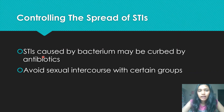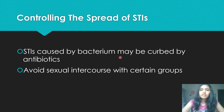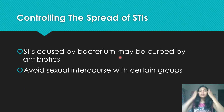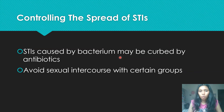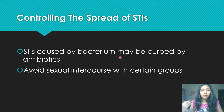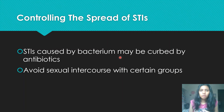An STI caused by bacterium can be curbed — meaning controlled or regulated — by antibiotics. Antibiotics are effective on bacteria because bacteria have cell walls, but they're not effective on viruses because viruses don't have a cell wall. So, STIs caused by bacterium can be treated with antibiotics.